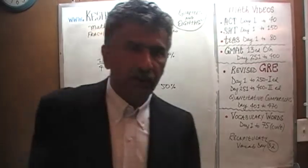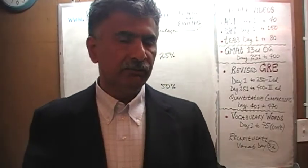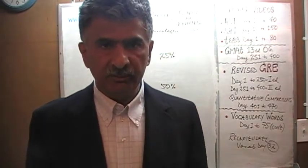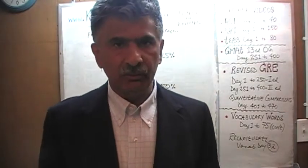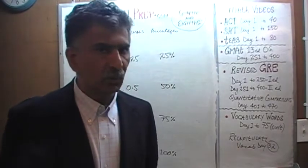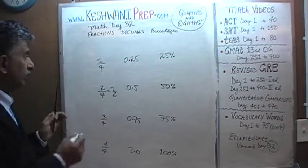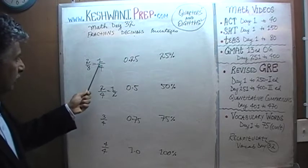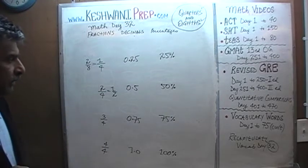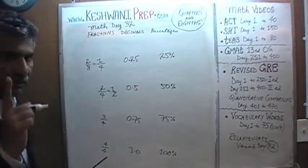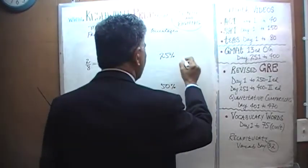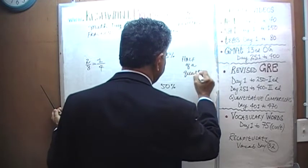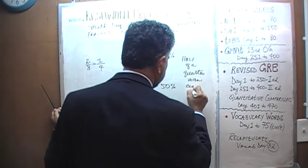What we need to understand is what knowing the quarters has to do with knowing your eighths. As we said in the beginning, they are one and the same — there is no difference at all. For example, one quarter is nothing other than two eighths. If you have two over eight and reduce it, it becomes one quarter. The only thing we need to memorize is that half of a quarter is an eighth.